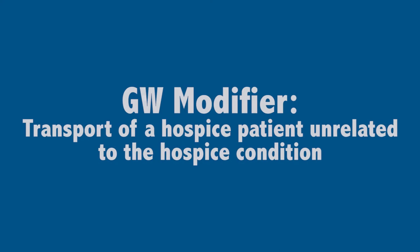When billing Medicare, billers and coders can use certain secondary modifiers to convey important information to Medicare, instructing Medicare to either pay or not pay a claim. The GW secondary modifier informs Medicare about the nature of a transport involving a patient who has elected the Medicare hospice benefit.